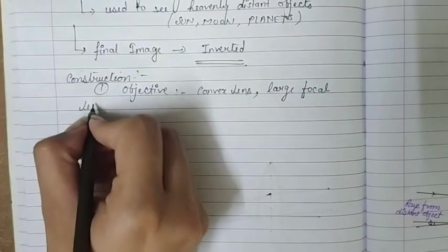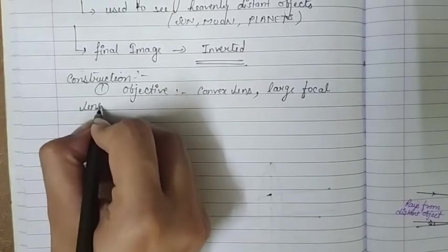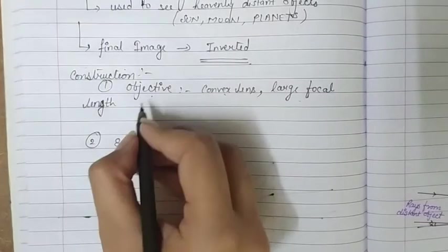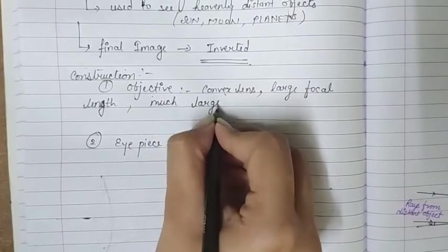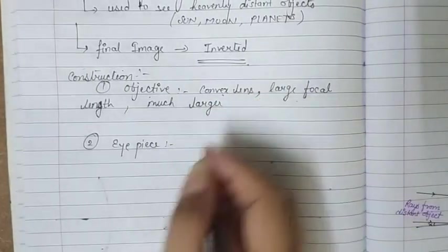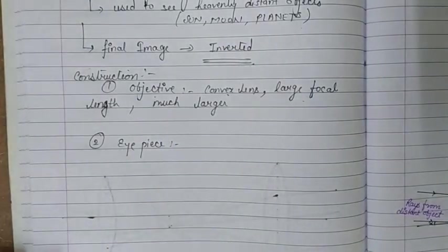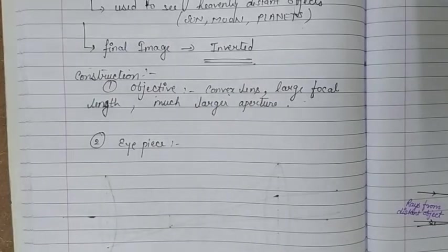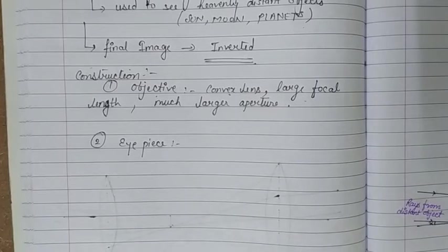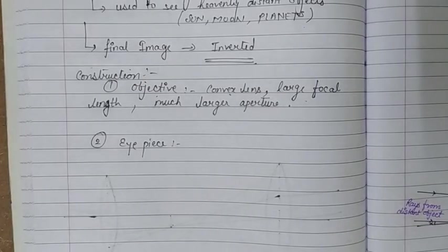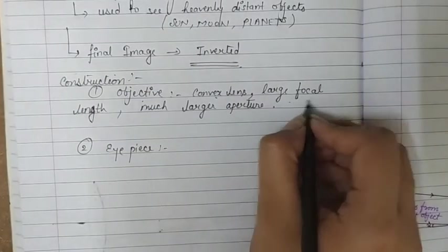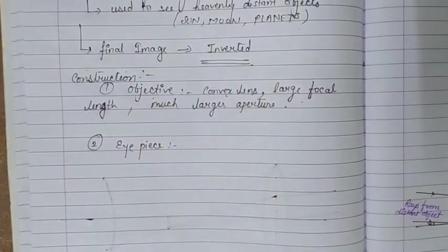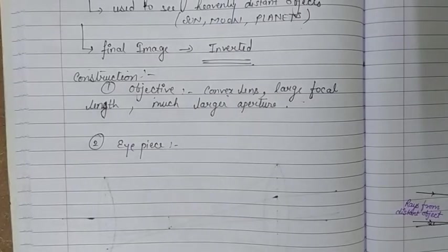The objective is a convex lens of large focal length. In the case of a microscope we take small focal length lenses, but in a telescope we take large focal length lenses. A larger aperture is needed because we are seeing large size distant objects, so the light coming towards the lens should be captured by it. That's why we take a larger aperture lens for the objective.